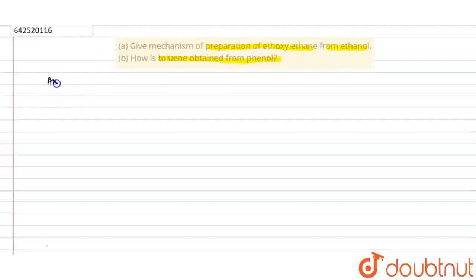Now comes to the first question. How is ethoxyethane prepared from ethanol? Ethanol heated with concentrated sulfuric acid at 413K gives ethoxyethane. It is an ether. The formula is CH3CH2OCH2CH3. This is ethanol and this is ethoxyethane.